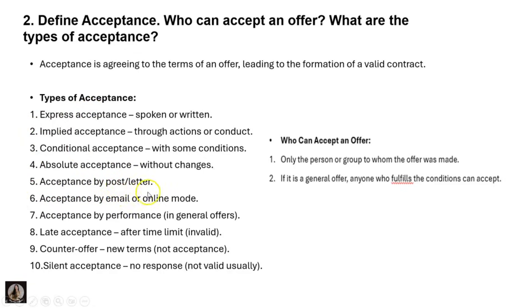Acceptance by email or online mode means accepting the offer electronically. Acceptance by performance in a general offer involves performing the act. Late acceptance means accepting after the time limit, which makes it invalid. Counter offer means new terms are proposed, which is also not an acceptance. Silent acceptance — no response — is not valid either.